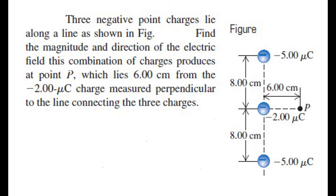Three negative point charges lie along a line as shown in the figure. We need to find the magnitude and direction of the electric field this combination of charges produces at point P, which lies 6 cm from the minus 2 microcoulomb charge, measured perpendicular to the line connecting the three charges.